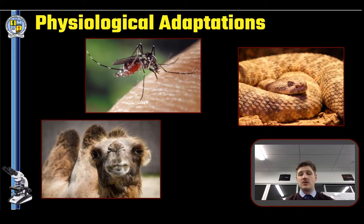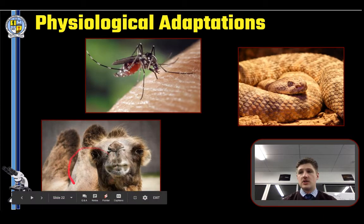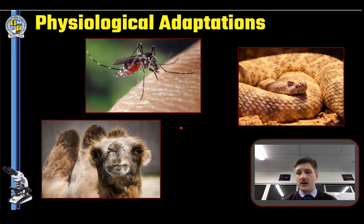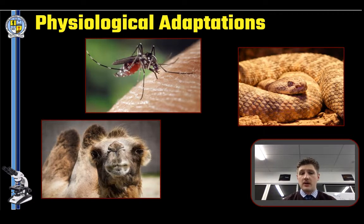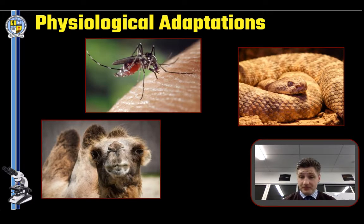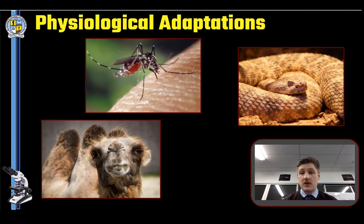The next physiological adaptation involves the internal systems of an organism. Take the camel — sometimes an organism is specifically adapted to survive extremely harsh environments. A camel has more efficient organs, particularly its kidneys, which are responsible for filtering water — very useful in a desert. It can also store a lot of fat in its humps, allowing it to survive long periods between finding a drink and a meal. Internal organs are another physiological adaptation.